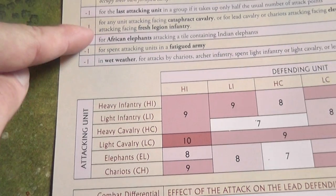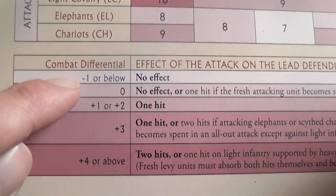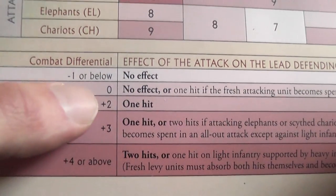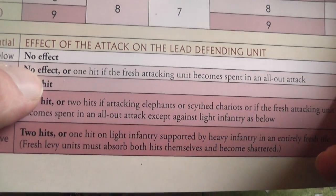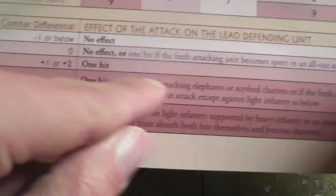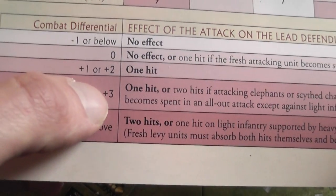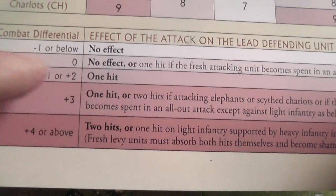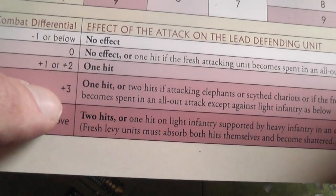Once you have the modified roll total, compare it to the number to hit. If lower, there is no effect. If equal, there is no effect unless your fresh attacking unit becomes spent to also inflict a hit on the opponent. Plus one or plus two deals a hit. Plus three inflicts a hit with the option to spend your fresh attacker to inflict an extra hit. Plus four or more inflicts two hits on the opponent.